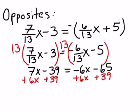And when we do that, we end up with 13x is equal to negative 65 plus 39 gives us negative 26.